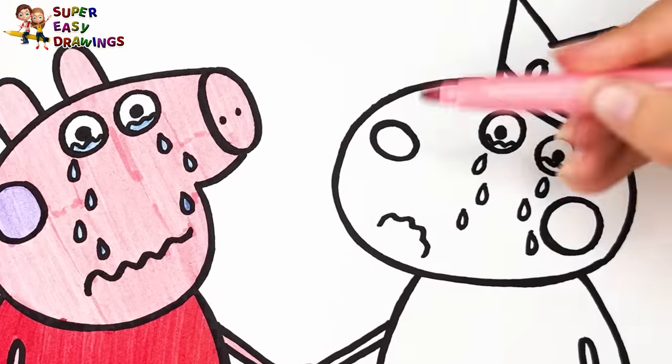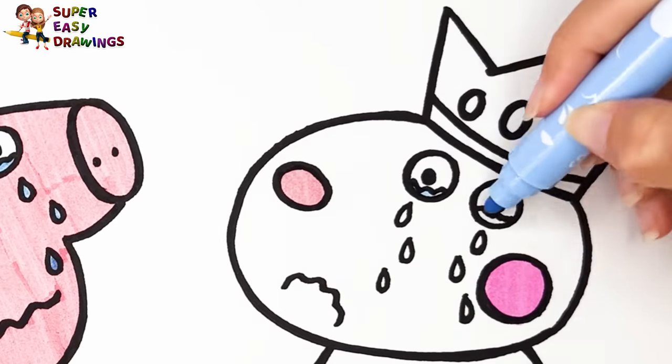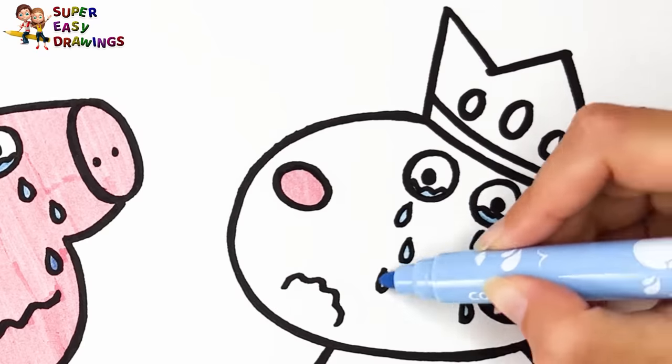Now I color Susie Sheep. I use two pink markers for her cheek and for her nose. I color the tears light blue.